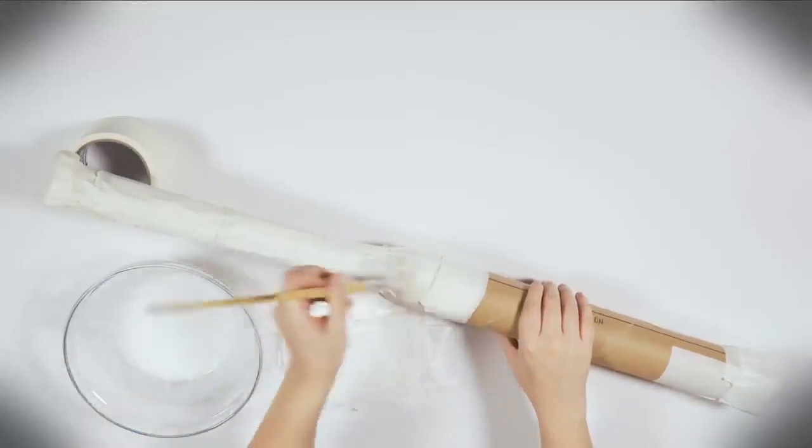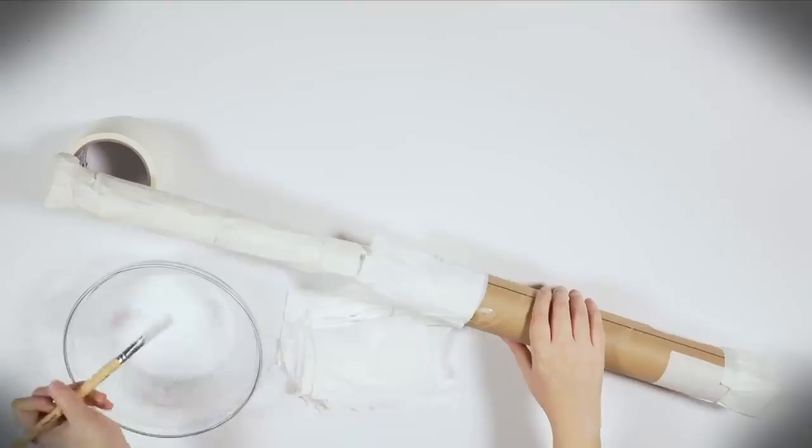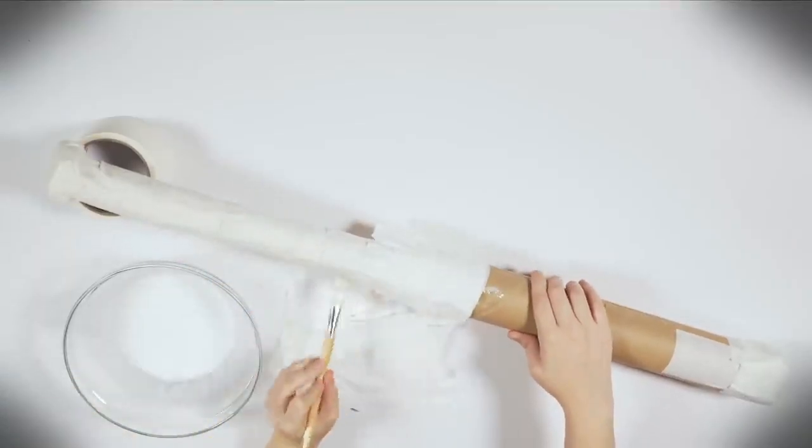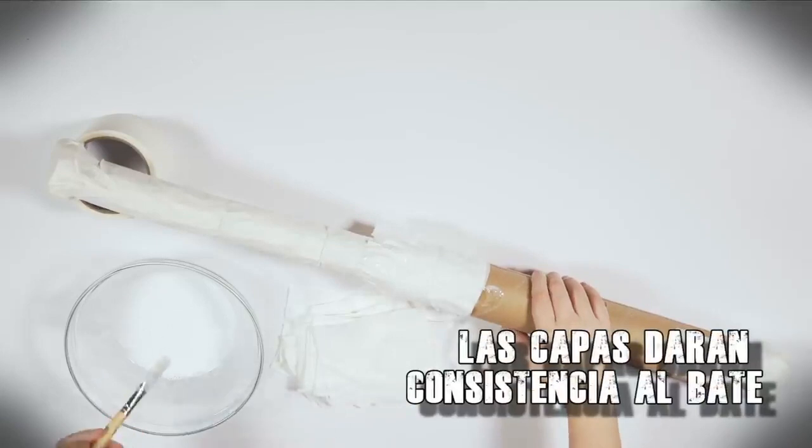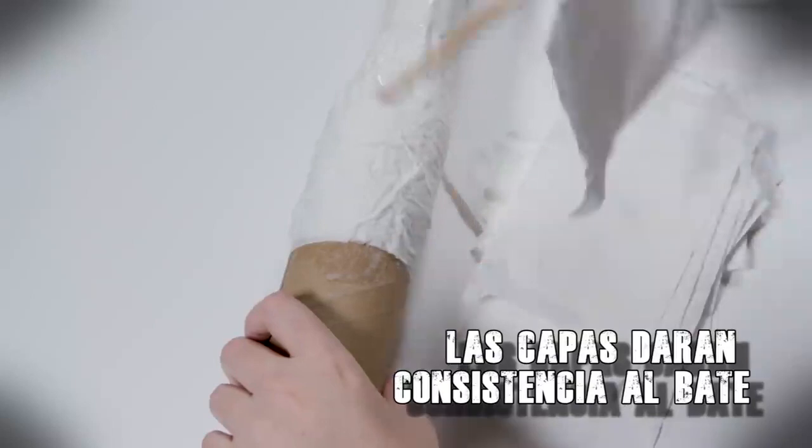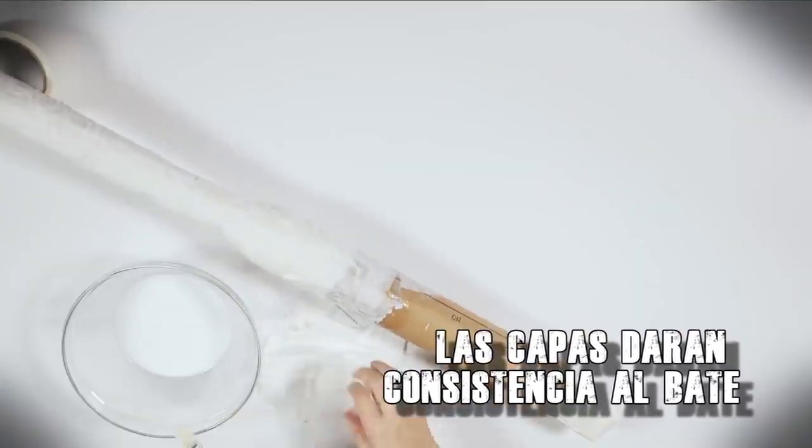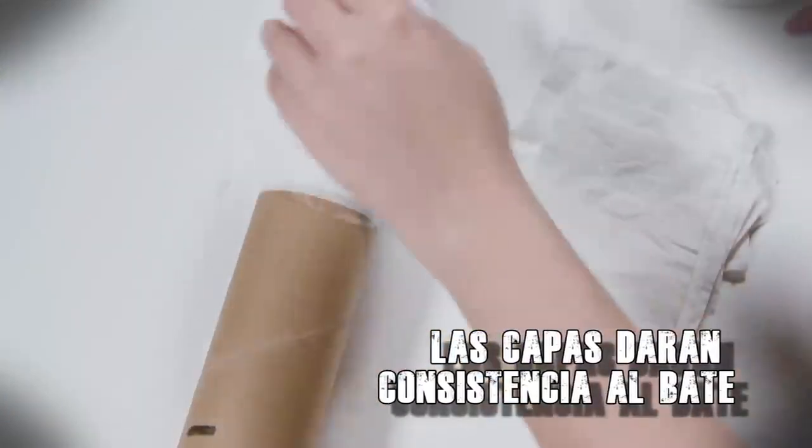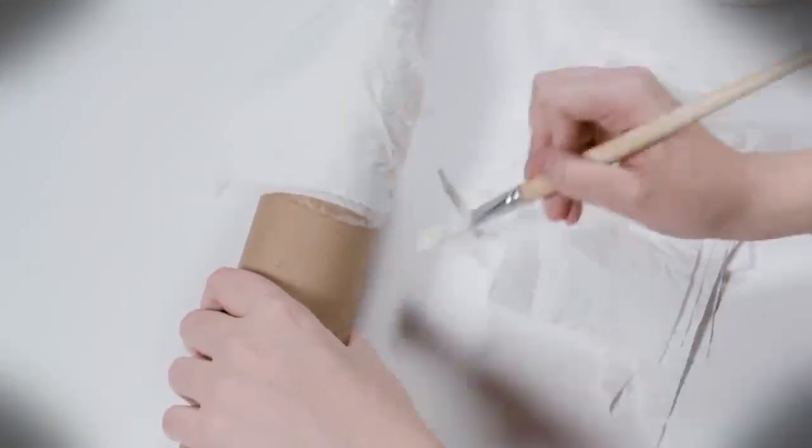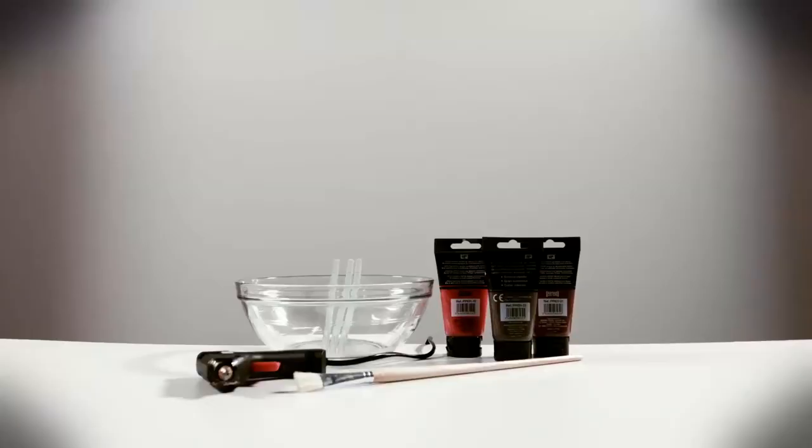Put the mixture on the bat and glue sheets of toilet paper to make three layers. Then wait for it to dry. Tick tock, tick tock. Let's go to the third step.